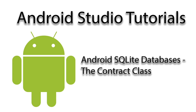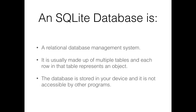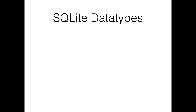In this tutorial, we will be creating an SQLite database for use with our AddressBook app. An SQLite database is a relational database management system. It is usually made up of multiple tables, and each row in that table represents an object. The database is usually stored on your device and is not accessible by other programs.